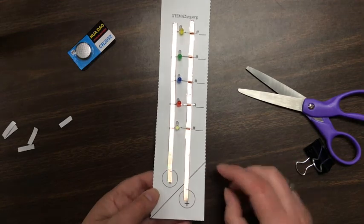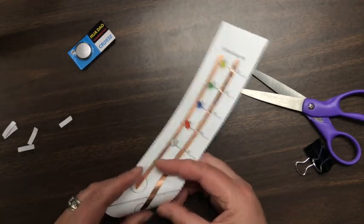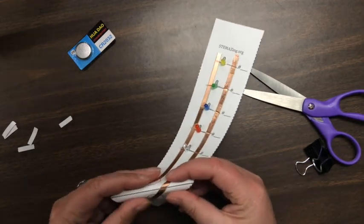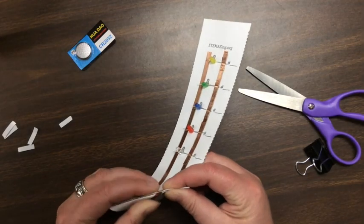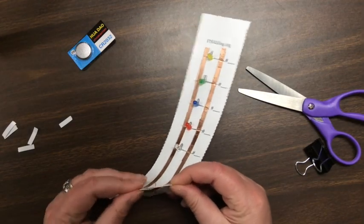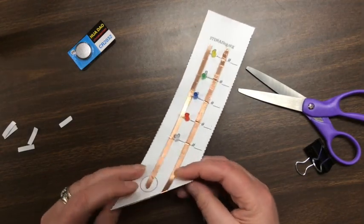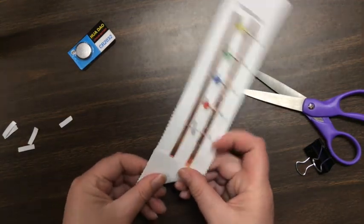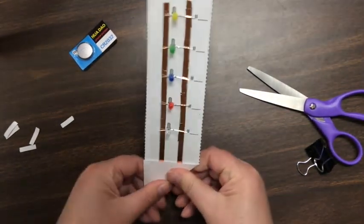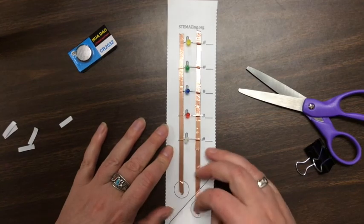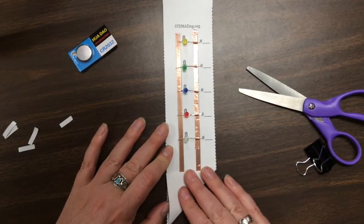This line right here is your guide for where to fold this back and forth. It's best to fold it back first so you can see where it needs to be folded, and then bend it forward along that same line, so that we have it in place for where we're going to put our battery and then our binder clip to hold this in place.